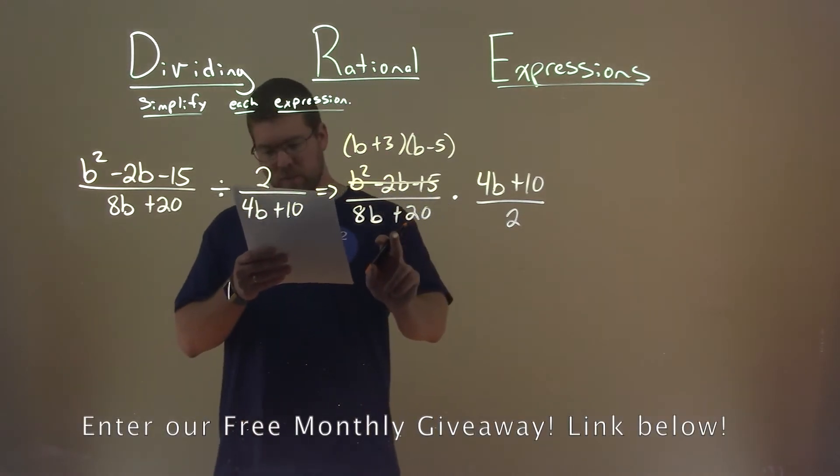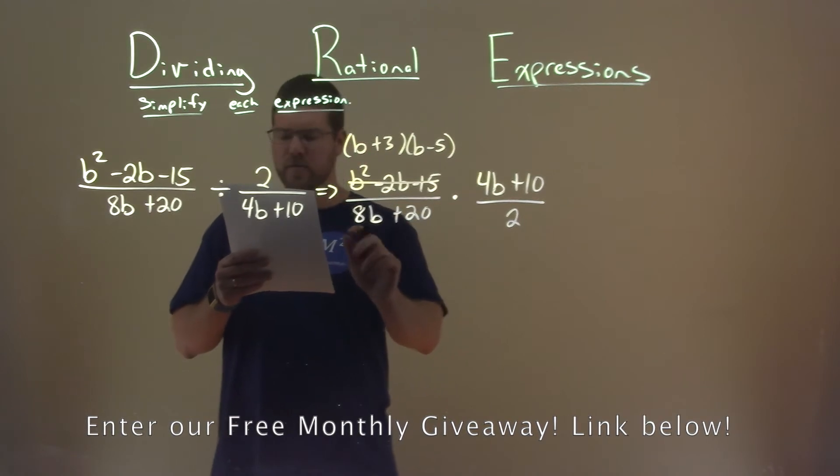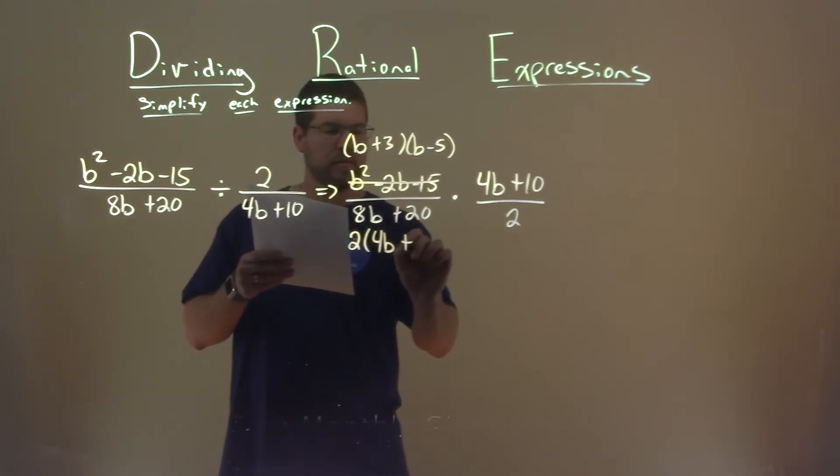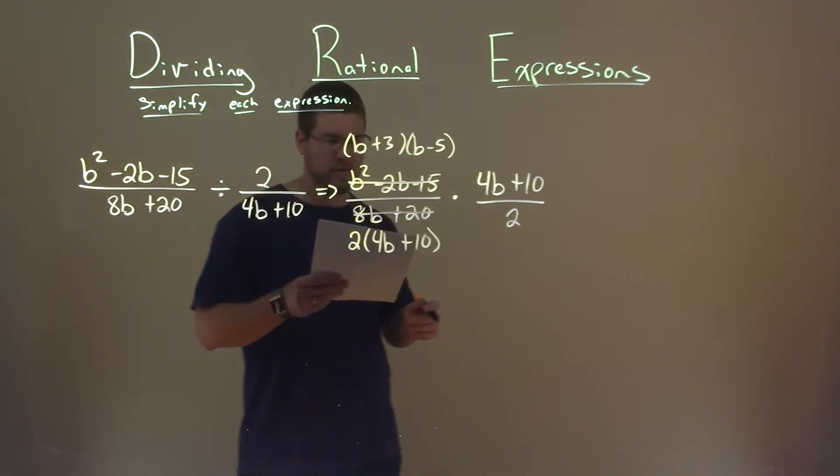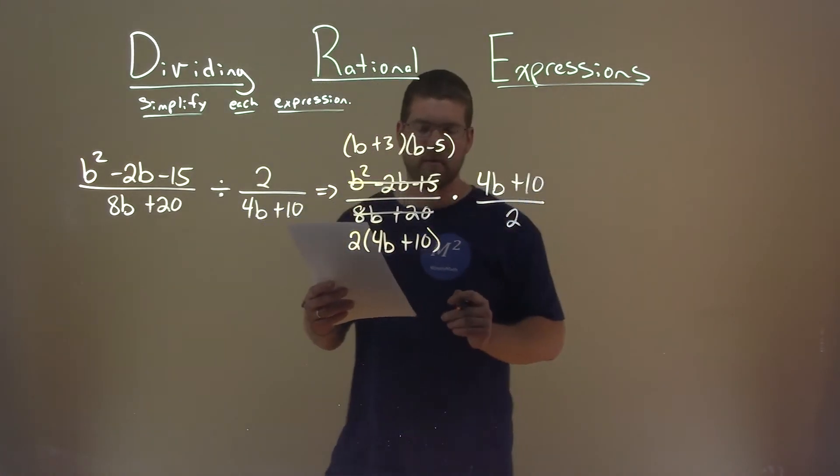Now, down in the denominator here, I can pull out a, well, I'm kind of planning ahead of time. I know if I pull out a 2, I'm left with a 4b plus 10 here. So I'm going to replace that here with 2 times 4b plus 10. I purposely planned ahead, seeing that there's a 4b plus 10 right there.